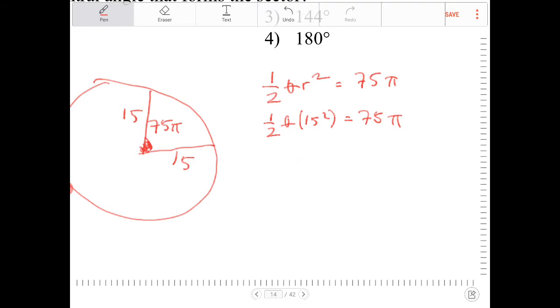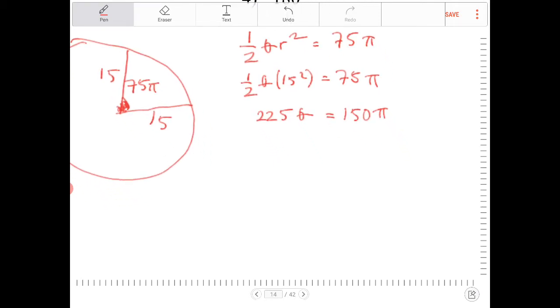15 squared is 225. I'm going to multiply both sides by 2. I get 150π. I want to divide both sides by 15, so I get 150 over 225π.